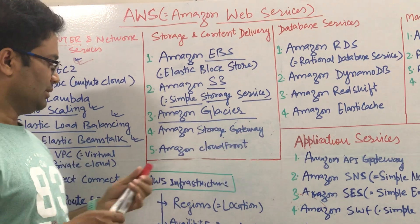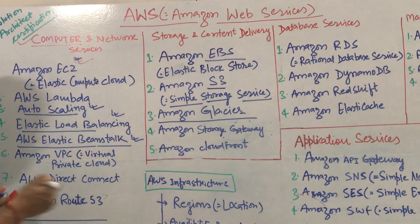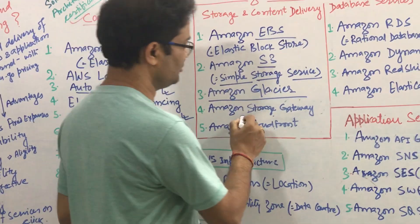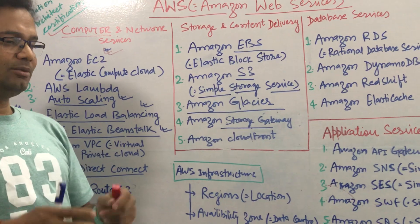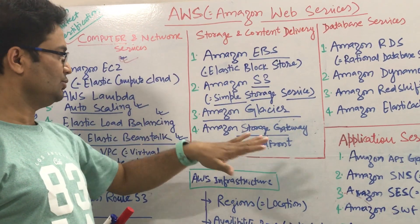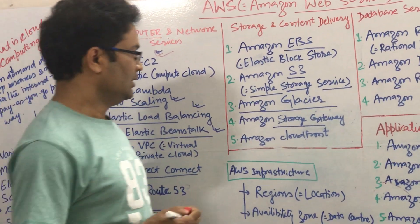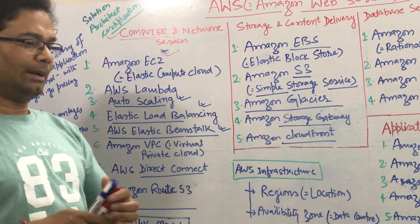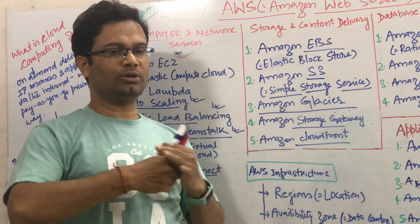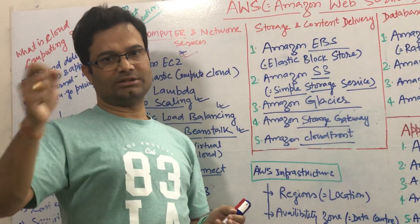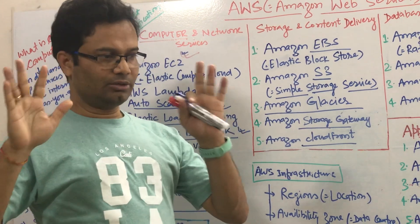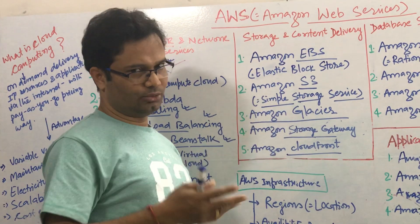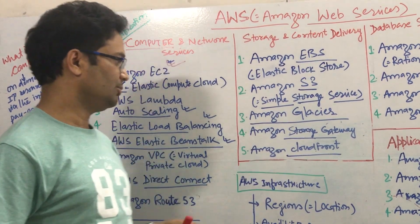Next is the Storage Gateway. Similar to Direct Connect, you can connect AWS from your premises. With the Storage Gateway, if you want direct connectivity between your premises and the cloud storage service, you can use the Storage Gateway facility. Next is CloudFront. If you want to connect between two AWS setups for content delivery, you can use CloudFront. A lot of movement of data can be done easily with the help of CloudFront.